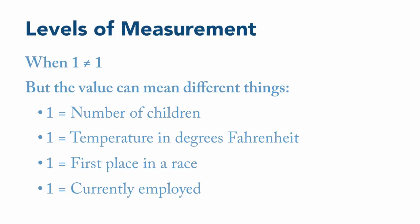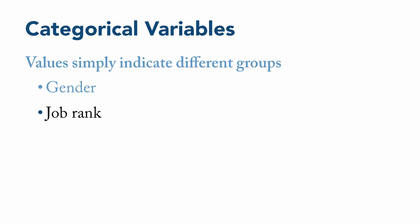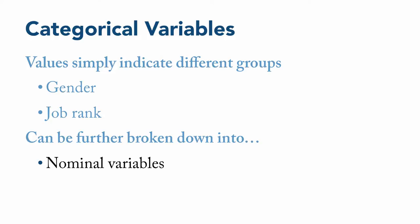We'll start by looking at categorical variables. As their name implies, these variables simply put people or observations into different categories or groups. Examples might include gender, where people can be categorized as male or female, and job rank, which might include many different levels. Categorical variables can also be broken down into nominal and ordinal variables. So that's what we'll look at next.